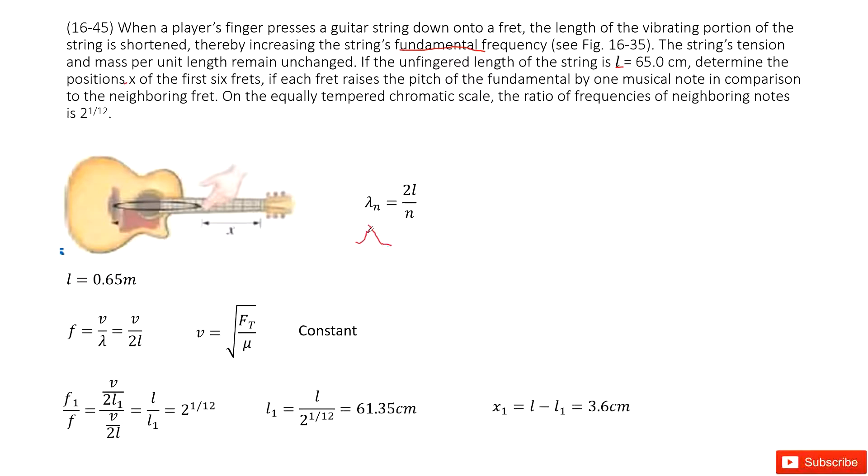So n is 1. So we have lambda just equal to 2L in this case. Now we can see initially what's given is L is 0.65 meters and then the frequency we need to find it. So how can we decide the frequency?